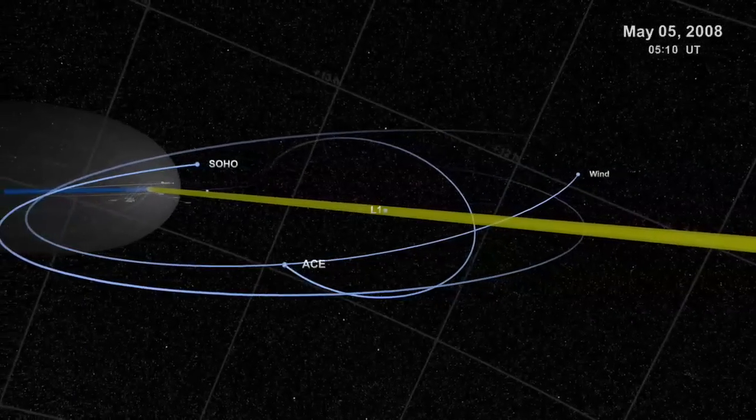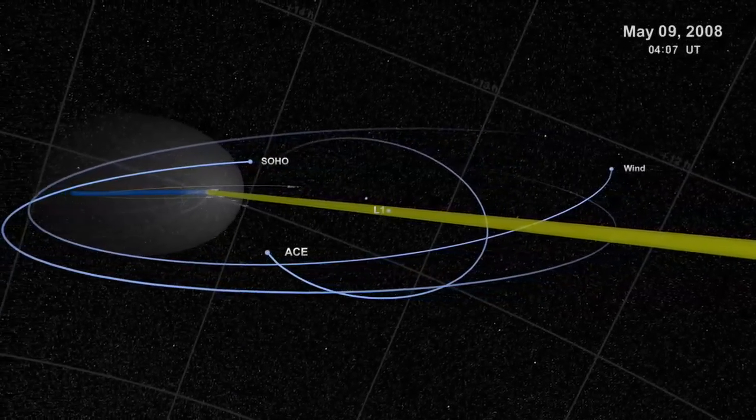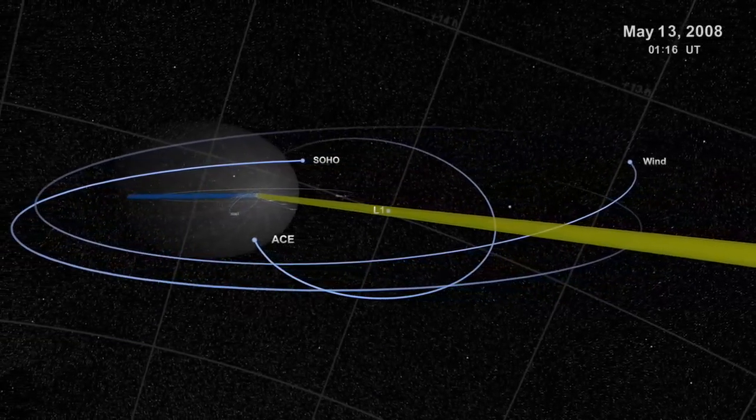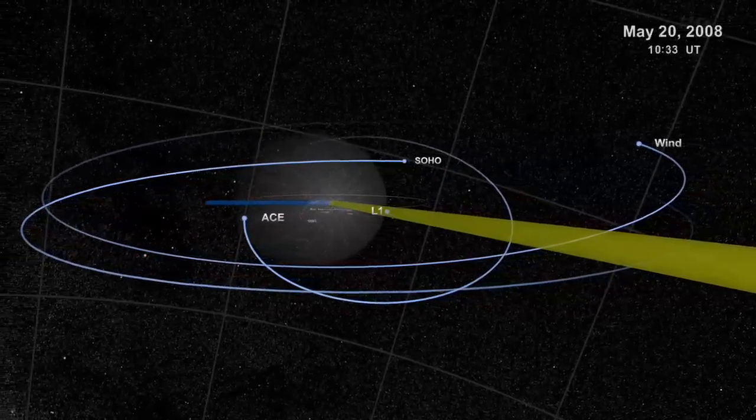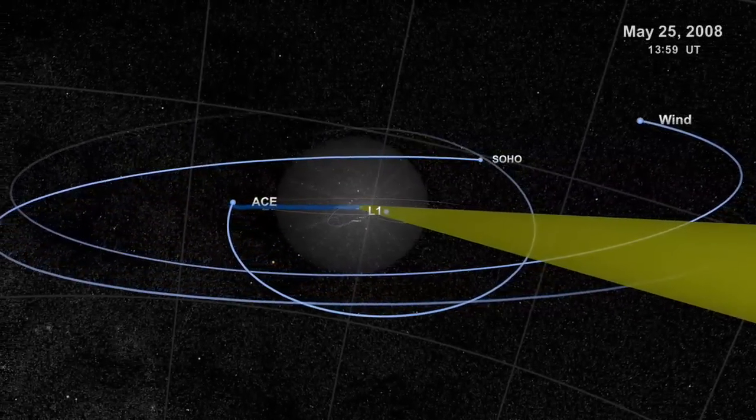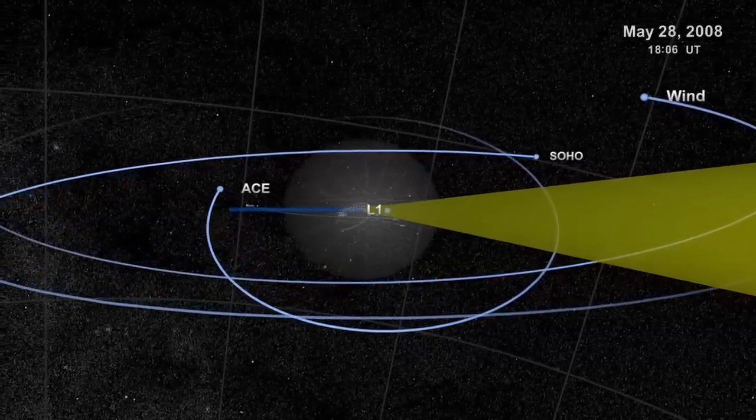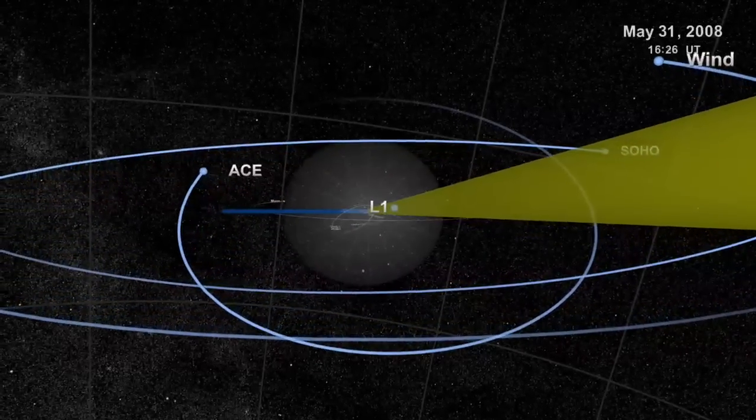These so-called halo orbits around L1 make good places for hovering spacecraft to take observations of either the Earth or sun. We find a number of observatories patrolling out here, including an extremely famous and extremely successful solar observatory called SOHO.